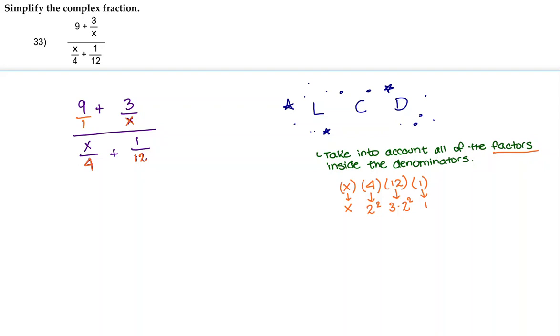The next step in finding the LCD is to not repeat any of the factors. But if they do repeat, then you're going to take the factor that's repeated with the highest degree. So for example, here we have x squared and x squared. Since they're both the same degree, we're just going to go ahead and cancel out one of them.